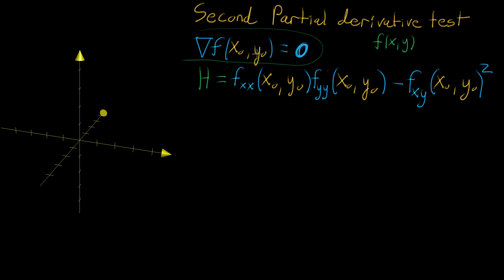When you find a point like this, in order to test whether it's a local maximum, local minimum, or a saddle point — without actually looking at the graph — the first step is to compute this value H, which I want to give intuition behind. You take all three second partial derivatives: the second partial derivative with respect to x, the second partial derivative with respect to y, and the mixed partial derivative (first with respect to x, then with respect to y). You evaluate each at your critical point, multiply the two pure second partial derivatives, and subtract off the square of the mixed partial derivative.